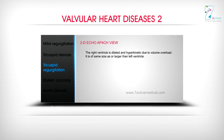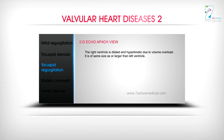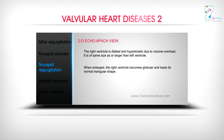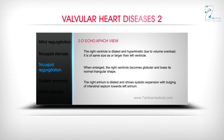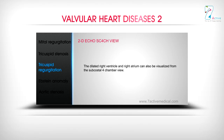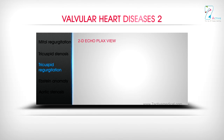Tricuspid Regurgitation: The right ventricle is dilated and hyperkinetic due to volume overload. It is the same size as or larger than the left ventricle. When enlarged, the right ventricle becomes globular and loses its normal triangular shape. The right atrium is dilated and shows systolic expansion with bulging of the interatrial septum towards the left atrium. The dilated right ventricle and right atrium can also be visualized from the subcostal four-chamber view.